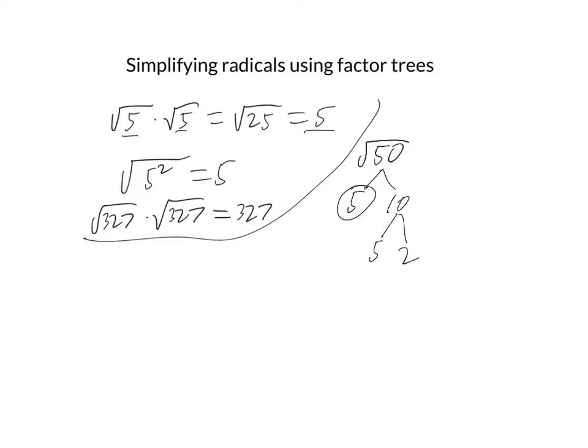10 is 5 times 2. 5 is prime, so I circle it. 2 is prime, so I circle it. So 50, what I've just done is rewrite the square root of 50 as the square root of 2 times the square root of 5 times the square root of 5.